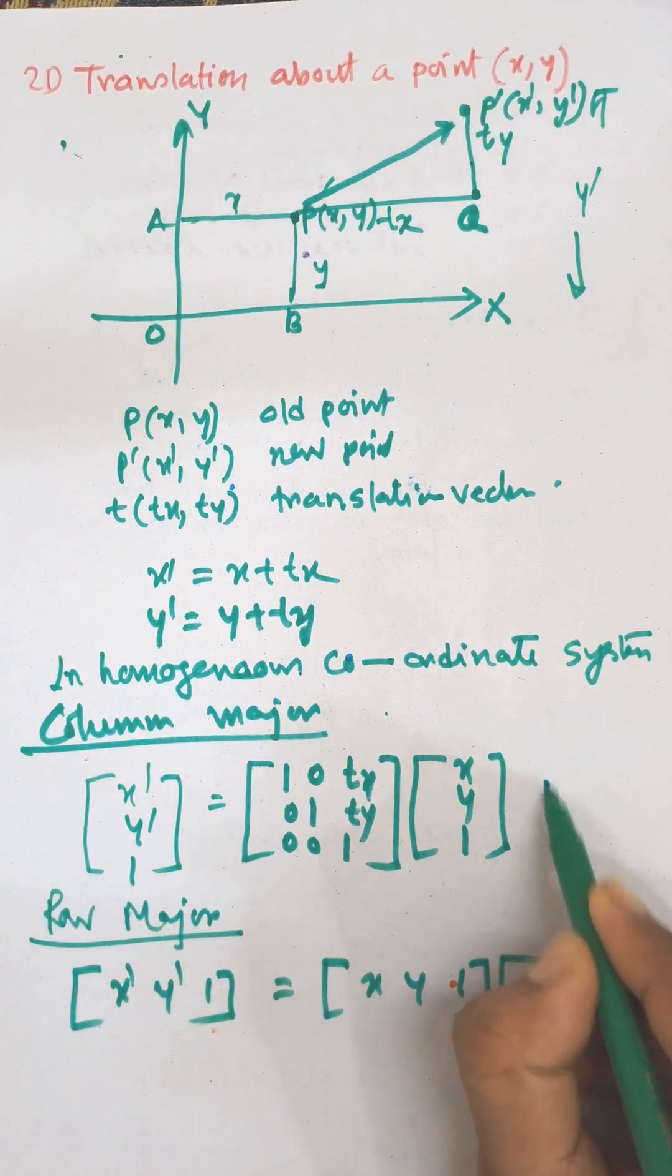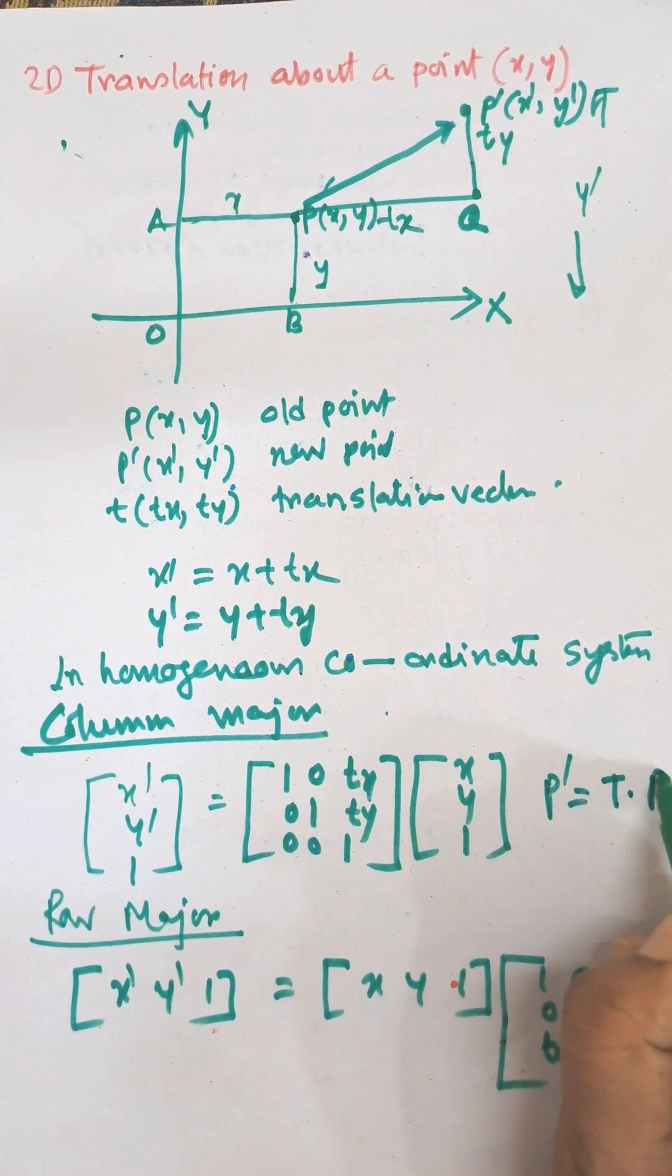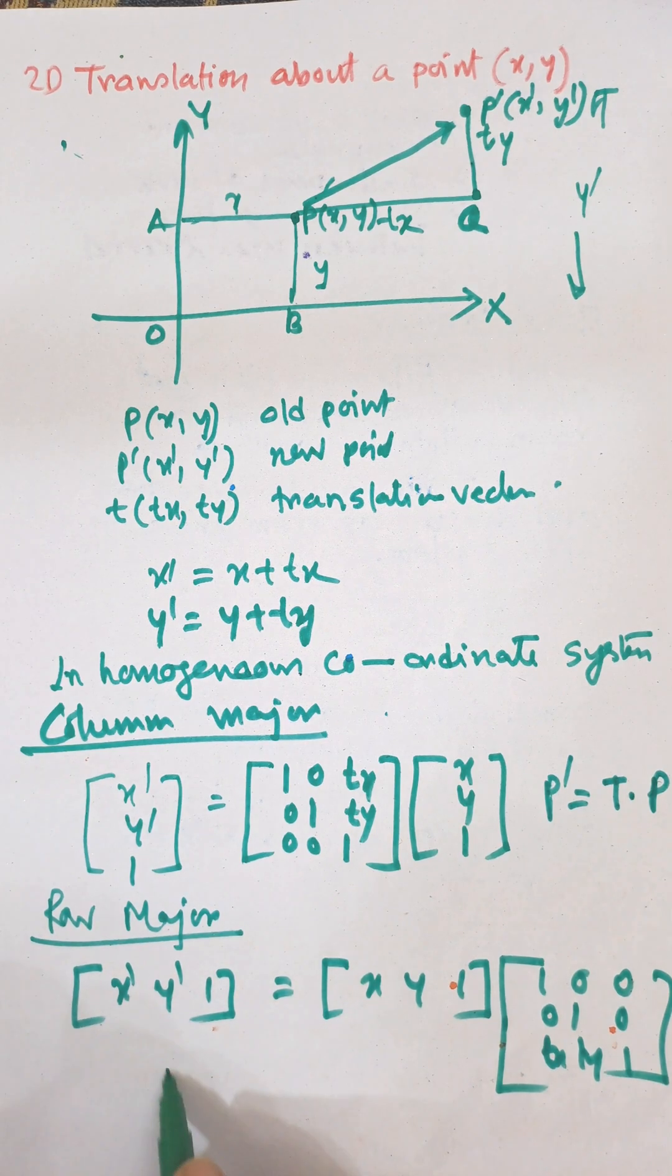In case of column matrix, P' = T × P, and in row matrix P' = P × T.